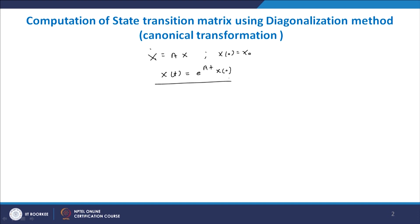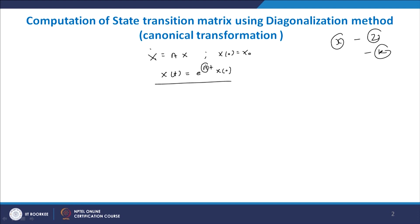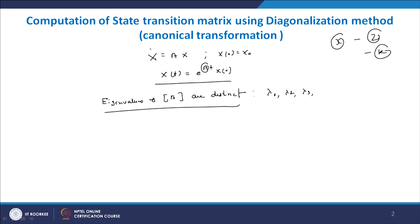Diagonalization is based on some additional or different state — that means the original system in state x can be transformed into state z or any other state. Here we first assume that matrix A has distinct eigenvalues, i.e., the eigenvalues are not repeated. We assume the eigenvalues of A are distinct: lambda 1, lambda 2, lambda 3, up to lambda n.